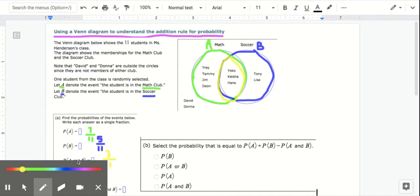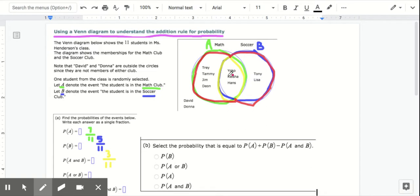What's the probability of A or B? Meaning that if you picked someone, they would either be in the math or soccer club. Well think of that as the entire thing, right? If they're in A or they're in B, any of these spots in either circle would work. So there's all of them except for these two. That would be 9 elevenths. That's the probability of A or B.